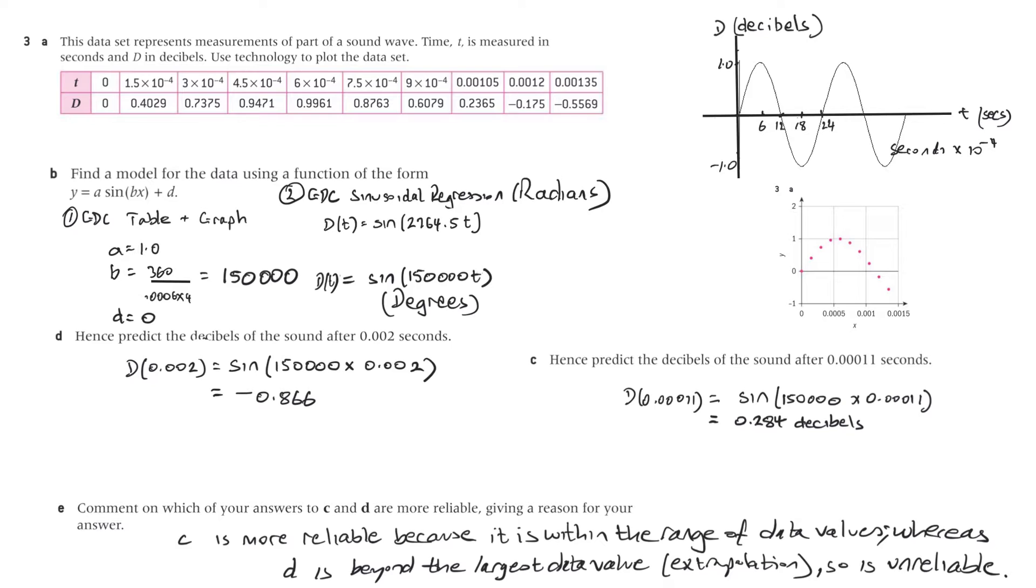Now, if you use the GDC sinusoidal regression, the GDC will give it to you in radians. So these are fairly equivalent, but that's in radians and this is in degrees. And so that's our answer for B. We just use those numbers there and we put it in that. So don't forget, A is 1, B is 150,000, and D is 0.